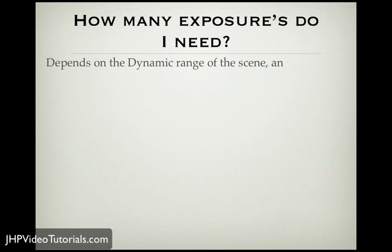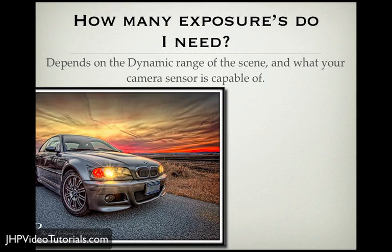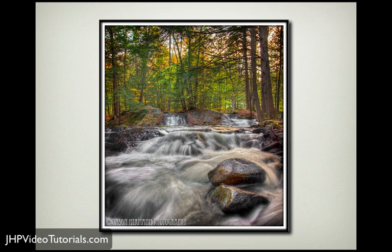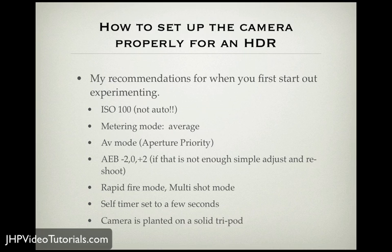How many exposures do you need? It really depends on how much dynamic range is in the scene. For one particular scene, I took six shots to get the headlight information as well as all the shadow information in the rims and grill. My recommendations when first starting out: use ISO 100. Your camera has more dynamic range the lower the ISO — the higher the ISO, the more sensitive your sensor is and the less dynamic range it can capture. So always use a low ISO if possible.